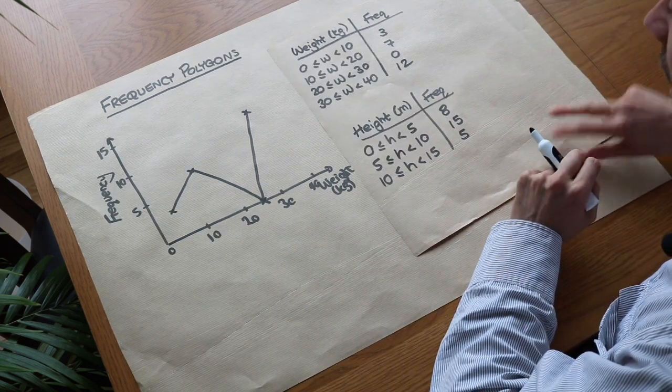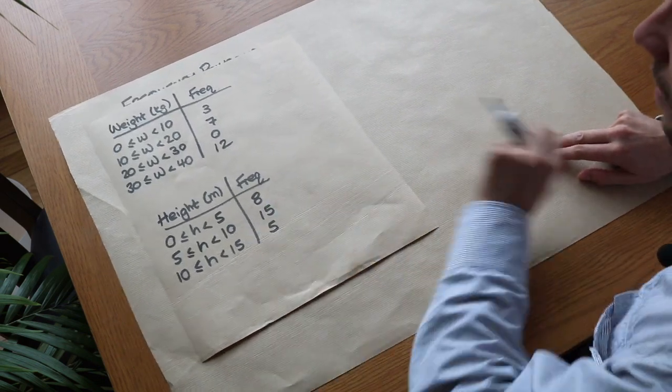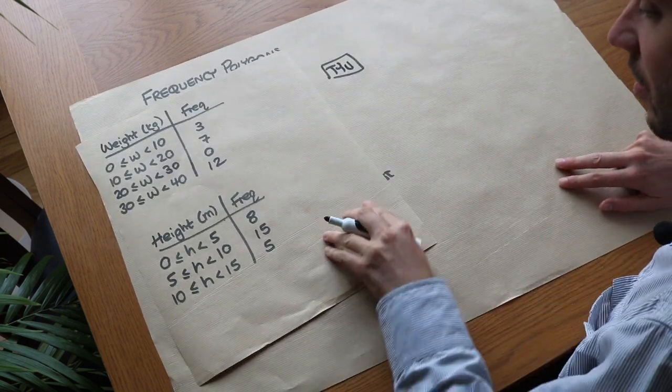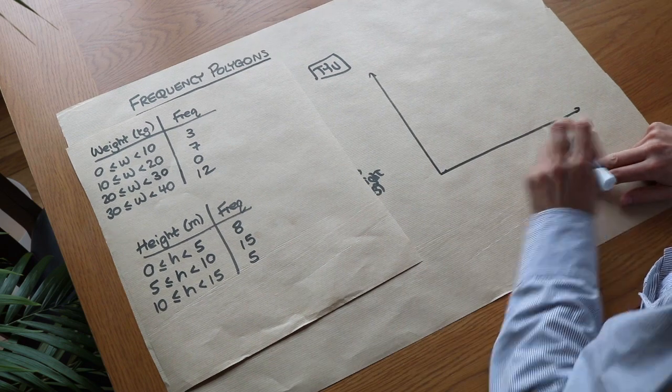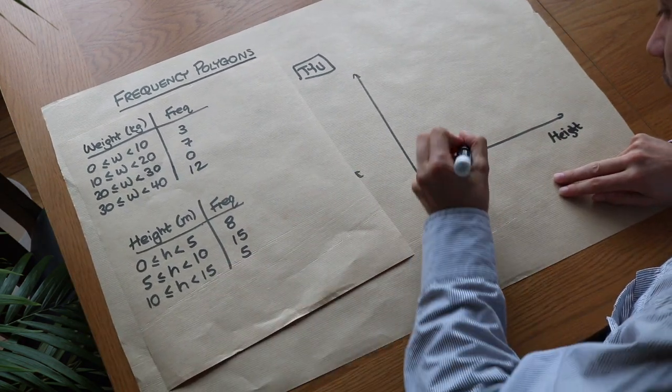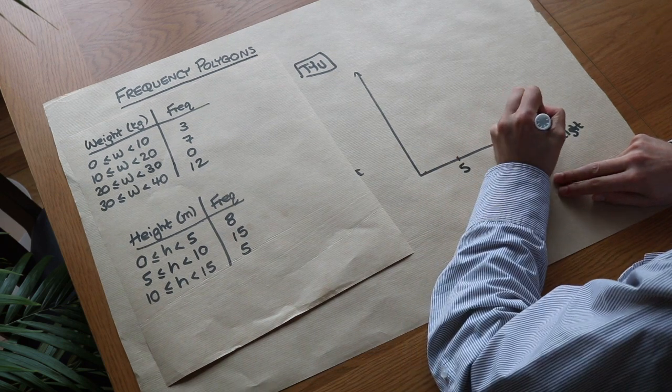Now I want you to do this second question as a kind of test your understanding question. You may want to pause the video here to have a go at this. Right, let's do it. So we need a suitable axis. We've got the heights here, so height, and we're going up to 15, so let's do 5, 10, 15.